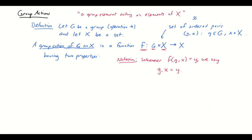We pronounce g·x = y as 'g acts on x to produce y,' or sometimes 'g sends x to y,' which makes g feel like a function — even though we haven't technically framed things that way. So anyway, that's enough introduction. Let's state what the two properties are.